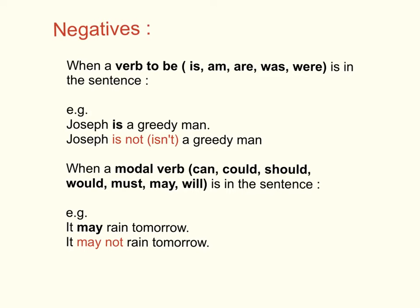When a modal verb — 如果这个是情态动词，modal verb — 例如是can, could, should, would, must, may, and will is in the sentence，见到这些字呢，我们亦都是在这些字后面加个not字下去了。例如，it may rain tomorrow. 明天may可能会下雨哦。